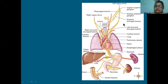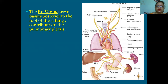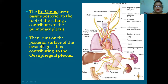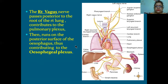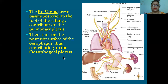This is the pharyngeal branch and superior laryngeal branch. The right vagus nerve passes posterior to the root of the right lung and contributes to the pulmonary plexus. Then it runs on the posterior surface of the esophagus, contributing to the esophageal plexus - so two plexuses: pulmonary plexus and esophageal plexus.